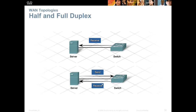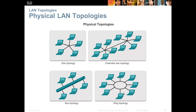Whenever possible, use switches instead of hubs; replace hubs if they exist. On a small network of five or six computers, hubs will work, but anything larger should use a switch. Common physical topologies include the star topology, the most common, with switches in the middle. Extended star topology is switch-to-switch with branches from there. The bus topology, less common now, has a central line that all computers tap into. The ring topology has devices physically laid out in a ring.